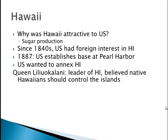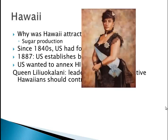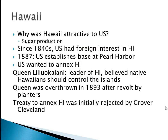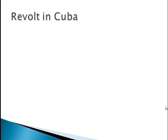Queen Liliuokalani — we'll just call her Queen Elle — was the leader of Hawaii and she believed native Hawaiians should control the island. She was dead set against imperialism and against anybody else controlling Hawaii. Eventually she's going to be overthrown after a revolt by planters, and there will be a treaty to annex Hawaii. But Grover Cleveland, who was president in 1893, wanted none of it. It's not until McKinley, after he's elected in 1896, that Hawaii becomes a part of the U.S.